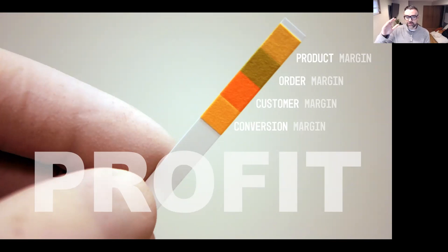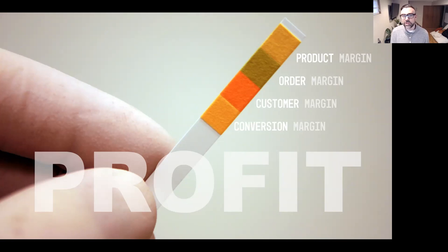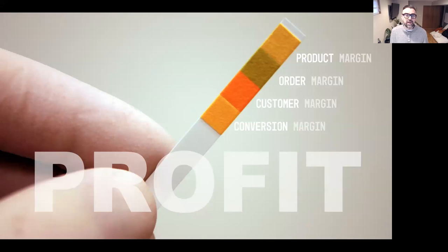The order margin covers anything tied to individual orders — per-charge fees like payment processing fees or variable fees tied to a percentage of sale. Then we're going to look at customer margin, which I'm most passionate about — that's what it takes to get customers in the door, like advertising spend or different tactics to bring people in. Finally, we've got the conversion margin — that funnel approach where we look at how to move people from paid to organic, new to returning, and get more people through the conversion funnel.